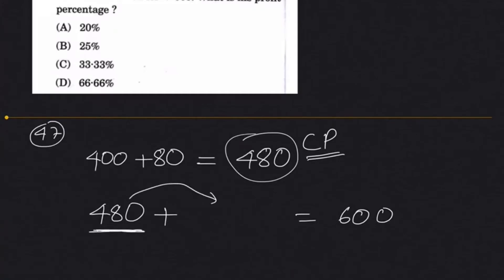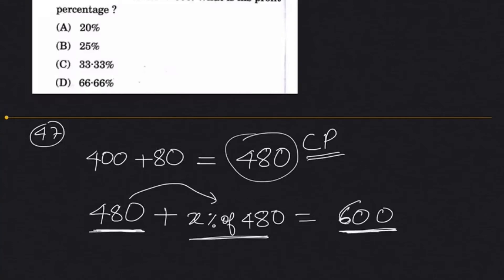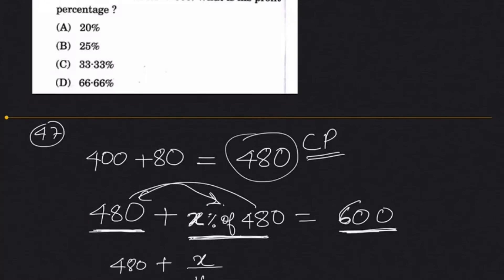What is the profit? X percent of 480. The total selling price is 600. So his profit is X percent of 480, which gives us the percentage. Setting up the equation: 480 plus X percent of 480 equals 600.